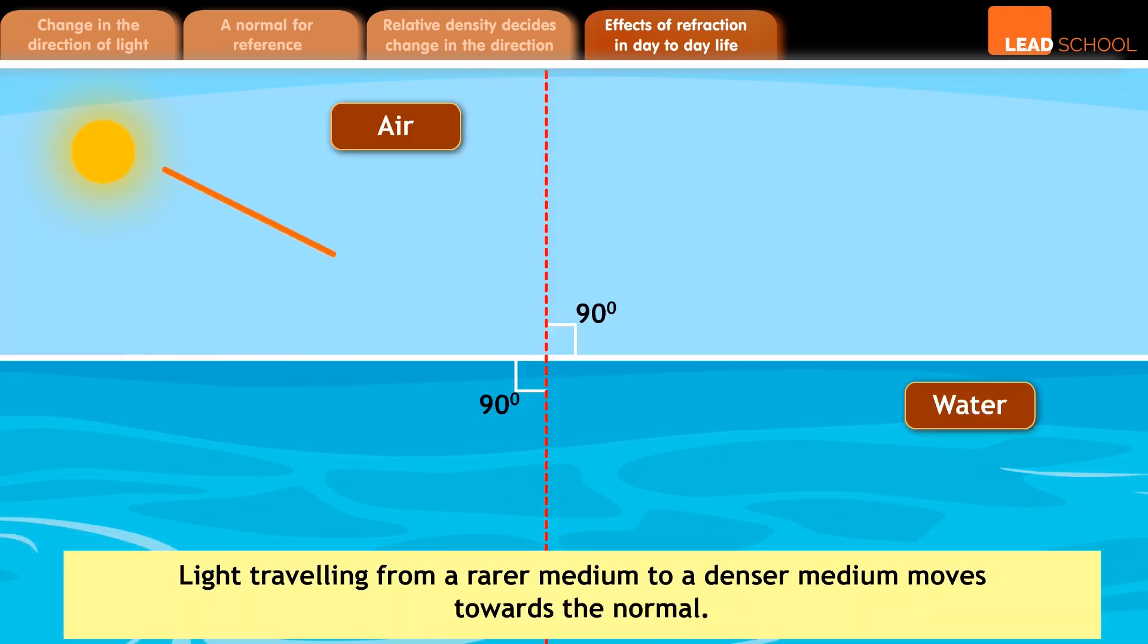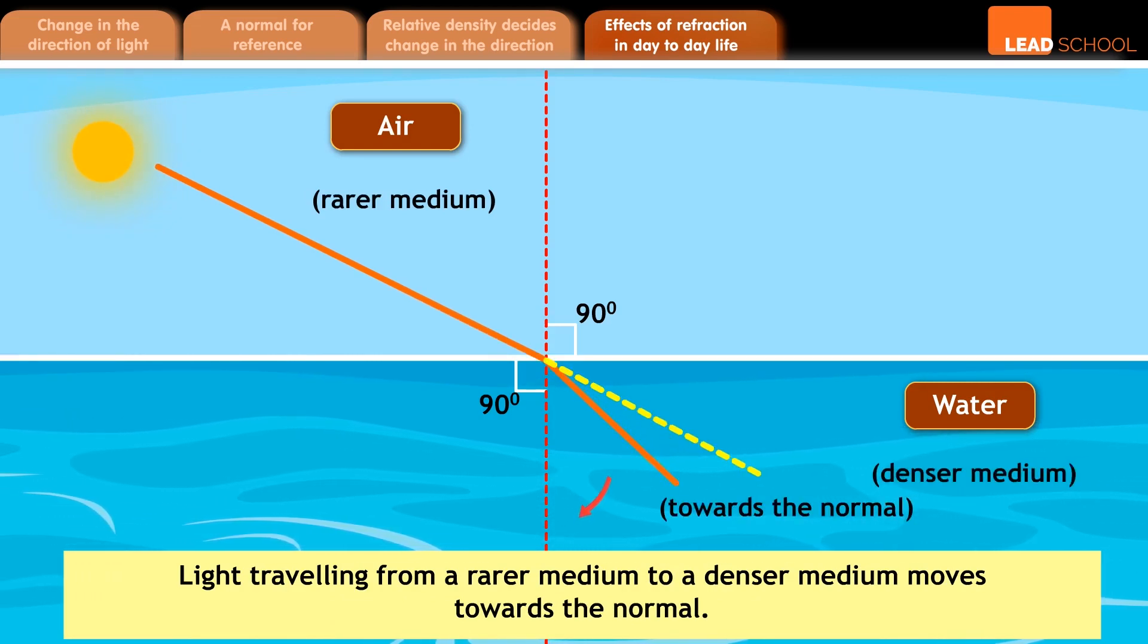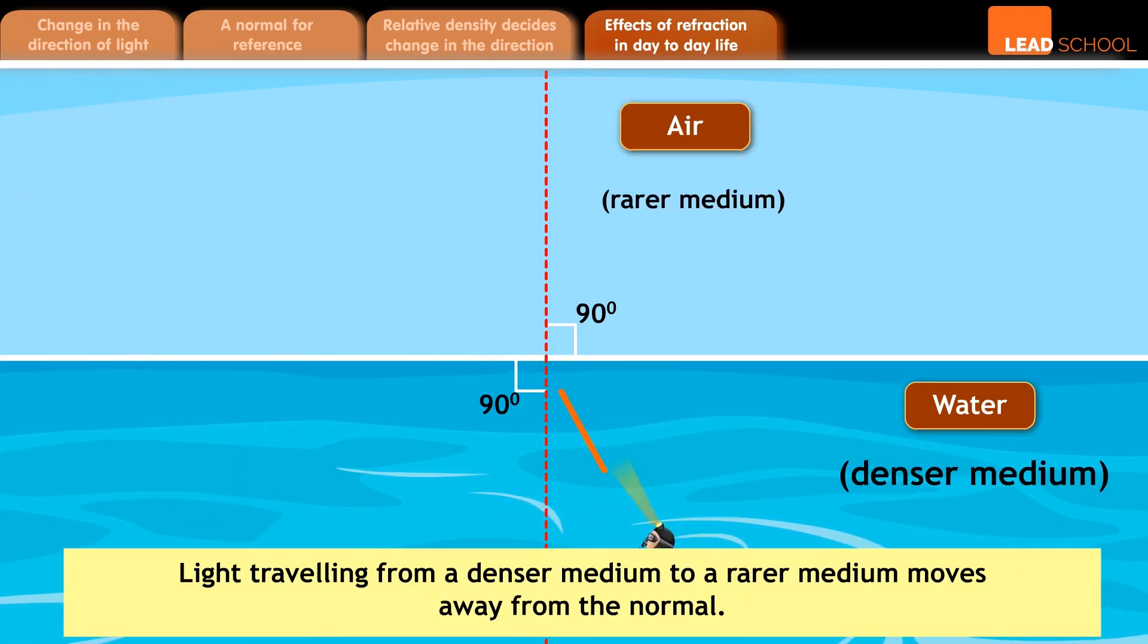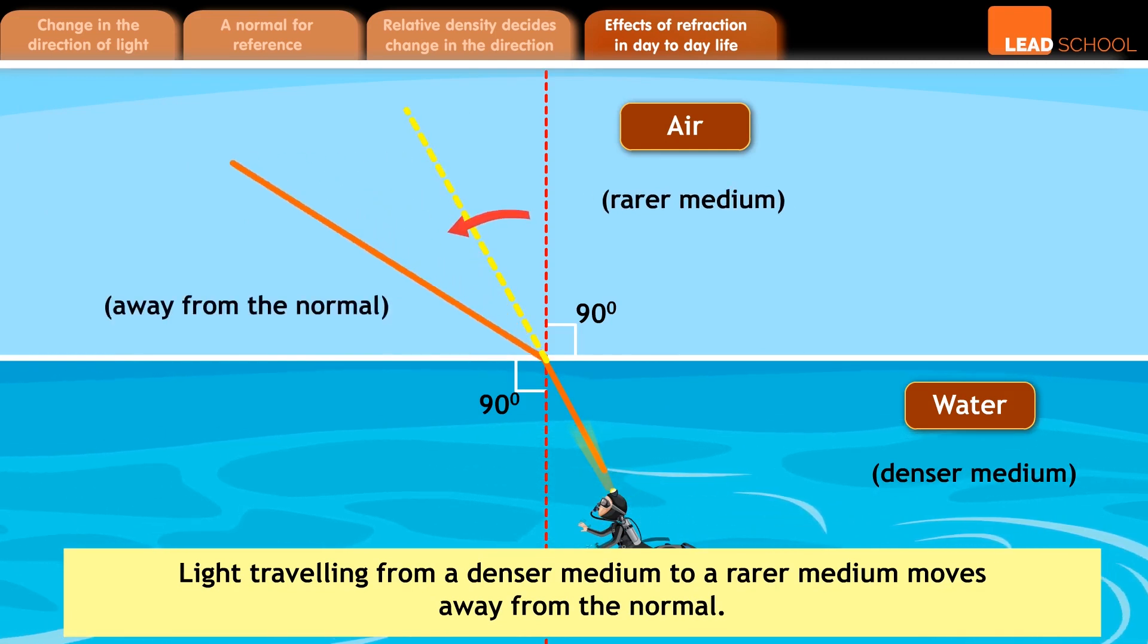When light travels from a rarer medium to a denser medium, it moves towards the normal. When light travels from a denser medium to a rarer medium, it moves away from the normal.